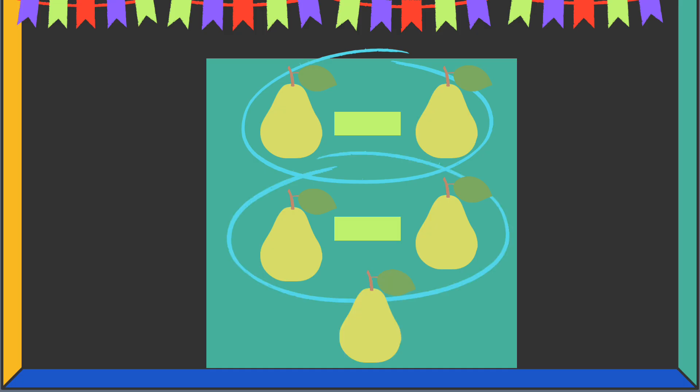So even numbers can be divided into two equal groups, and odd numbers always leave one out.